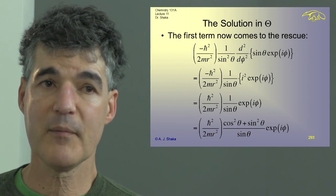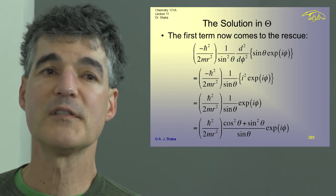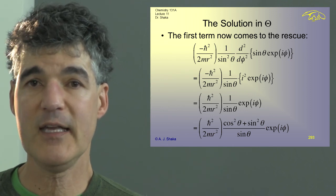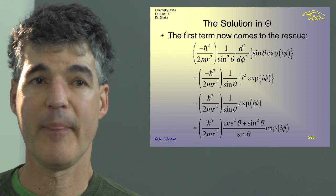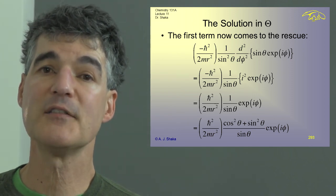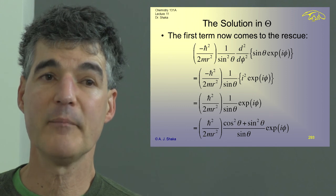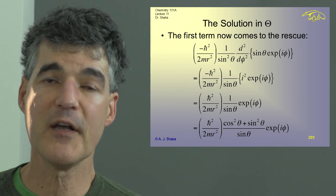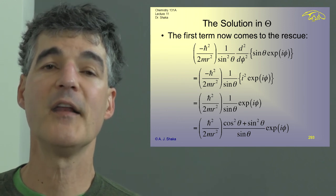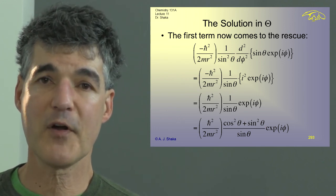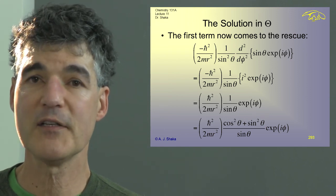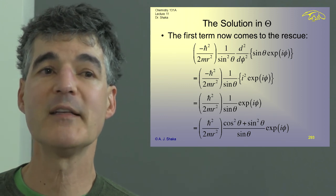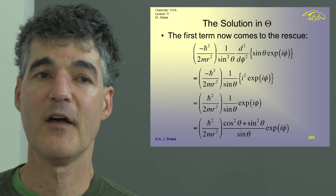That part is 1 over sine squared theta times the second derivative with respect to phi of sine theta times E to the i phi. The second derivative of E to the i phi brings down i squared equals minus 1. That gets rid of the minus sign on H-bar squared. What I end up with, because of the 1 over sine squared theta out in front, is H-bar squared over 2MR squared times 1 over sine theta times E to the i phi.